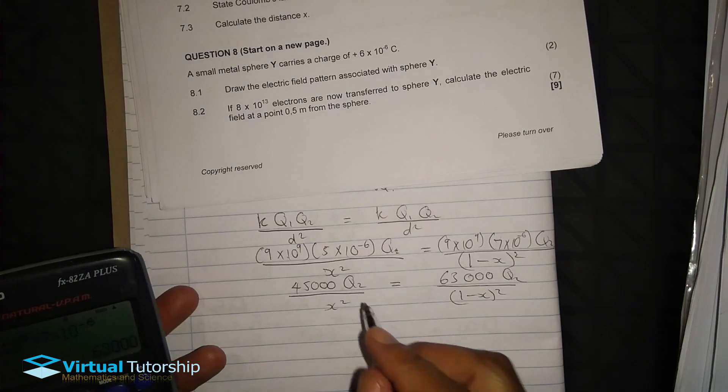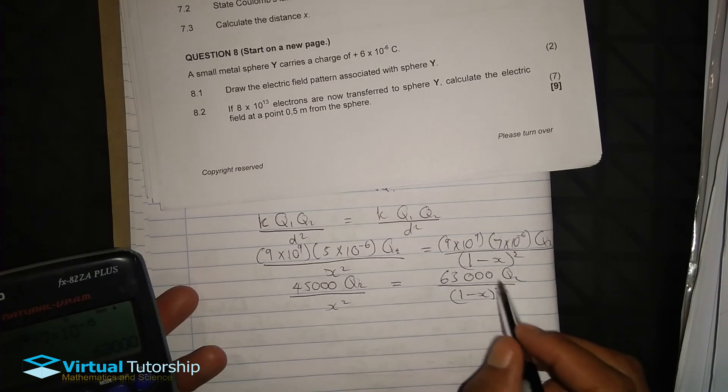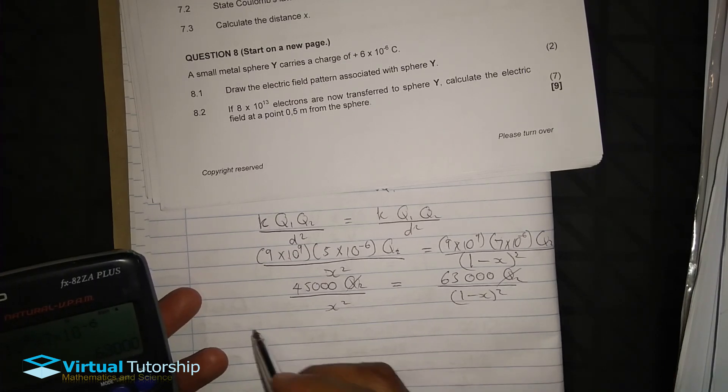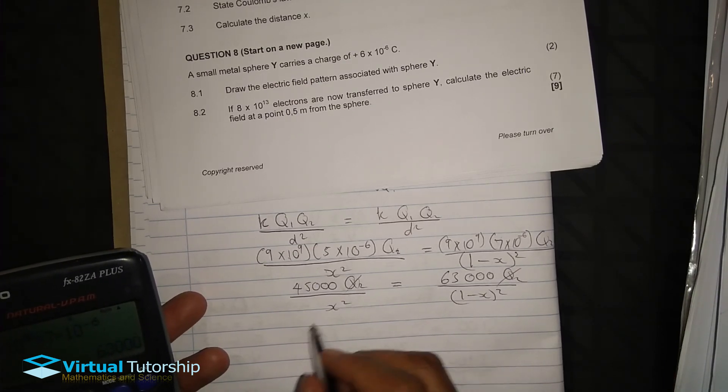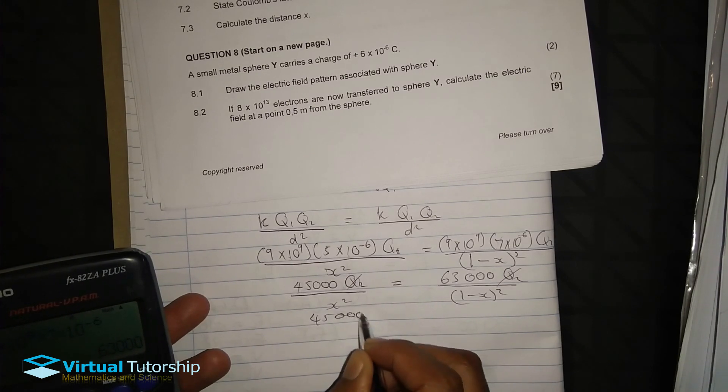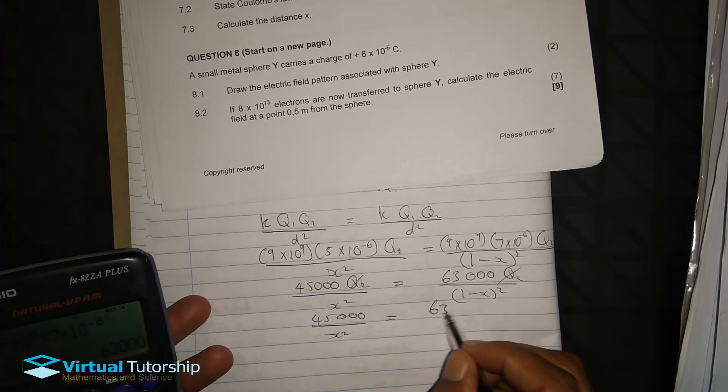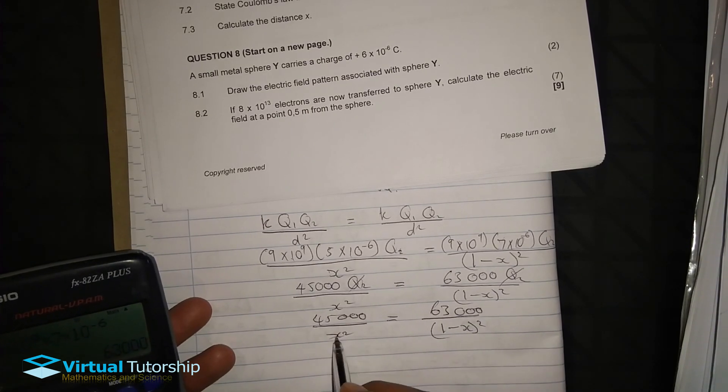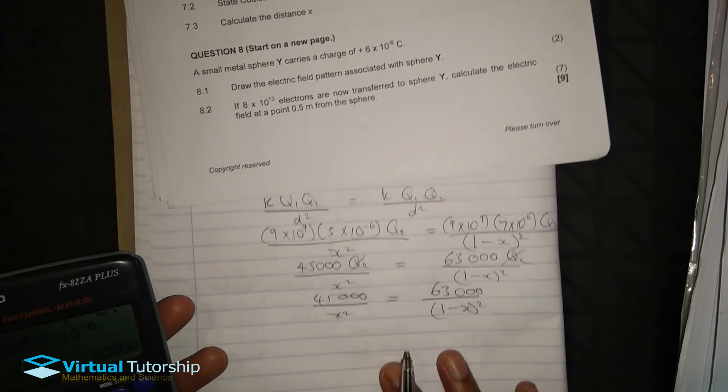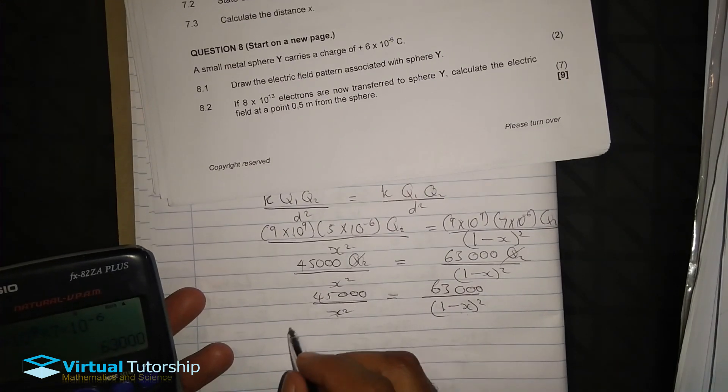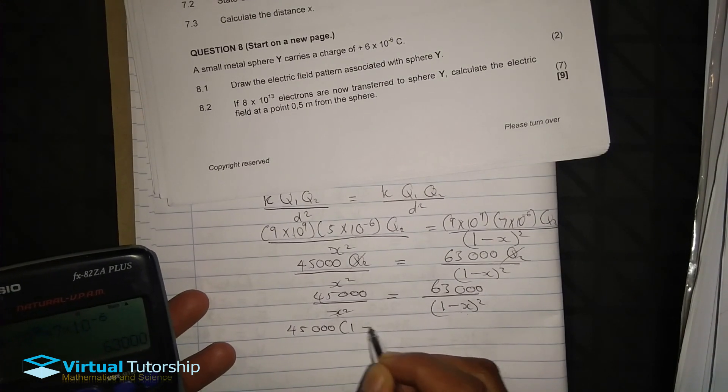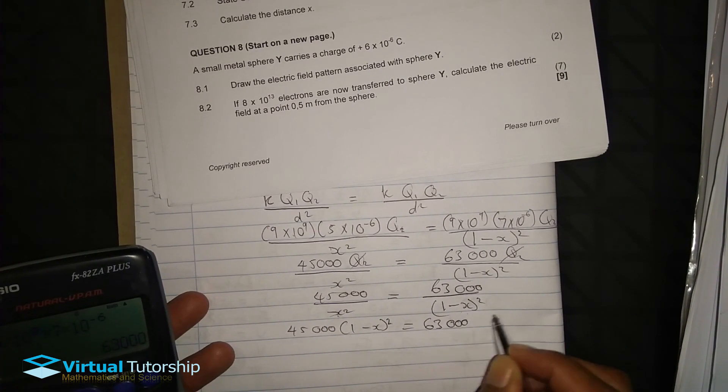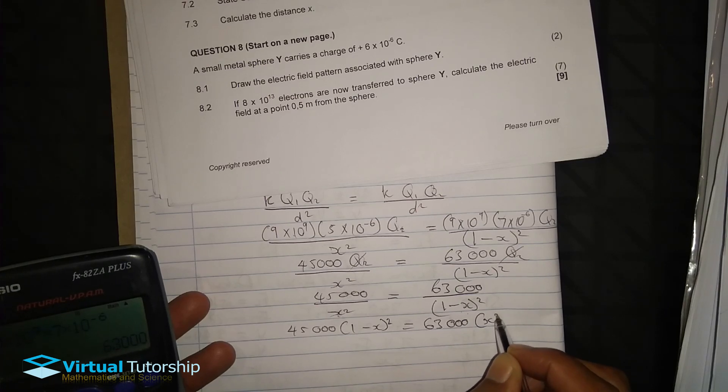Since the Q2 and the Q2 are equal, they cancel each other out. So therefore we have 45,000 divided by X squared equal to 63,000 divided by 1 minus X squared. The aim is to calculate X. So here cross multiply, you get 45,000 times 1 minus X squared equal to 63,000 X squared.